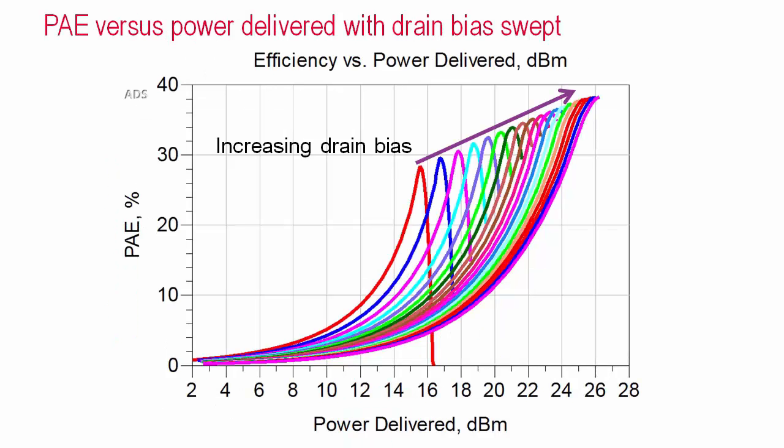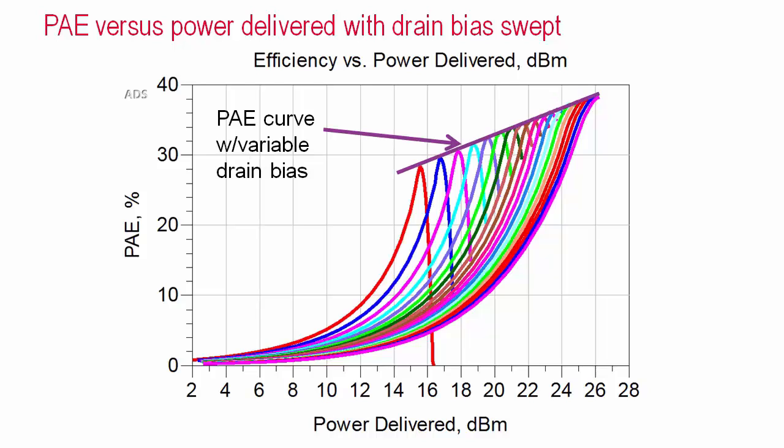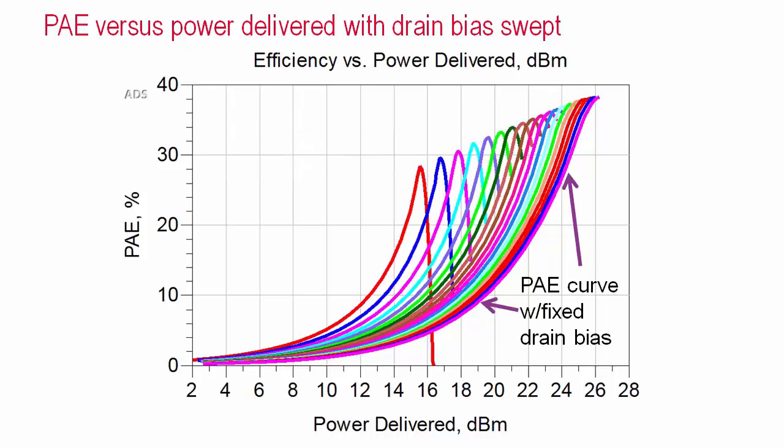What happens to the PAE versus output power curves as you vary the drain bias? This plot shows these curves as the drain bias voltage is stepped. If the input power is low, use a lower bias voltage and operate along the top line instead of along the PAE curve with a fixed drain bias.